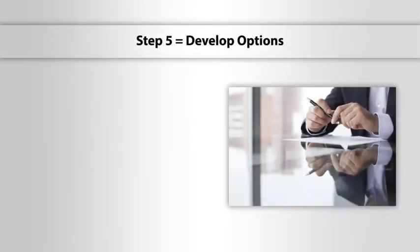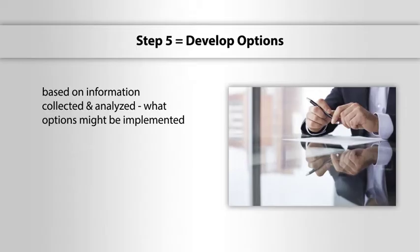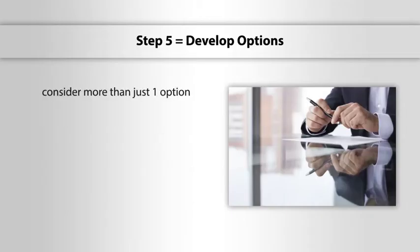Step five is develop options. Based on the information you've collected and analyzed for the problem you've clearly articulated, what options might be implemented to bring about the improvement target needed. Consider more than just one option. My rule of thumb is to have three options available. As you develop your options, consider the practicality and quality of the option and what will be needed to gain approval from decision makers. While options are good to have, it's also valuable to analyze the alternatives for effectiveness in solving the issue, the feasibility, and the impact.